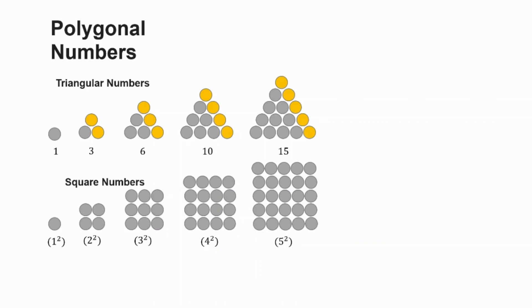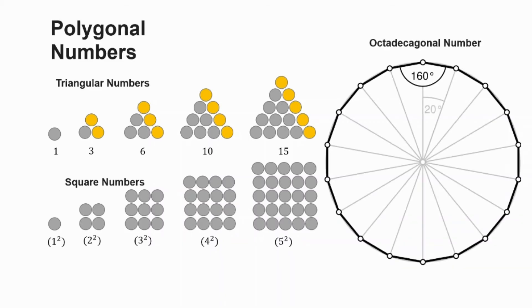Now we can keep going with these polygons and move on to hexagons or octagons, but the place where 100 comes into play is at the 18-sided polygon, otherwise known as an octodecagon.